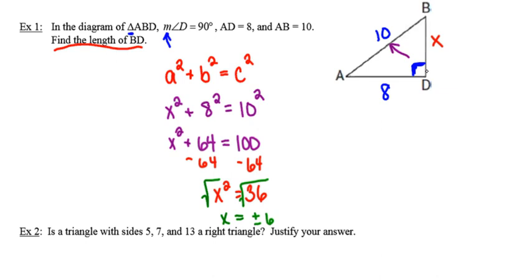So X is equal to, it can either be a positive 6 or a negative 6. In this case, X represents the length of one of the sides of our triangle. Negative 6 is an inappropriate solution. It doesn't make sense. We can't have a negative number for the length of a side of a triangle. So we're therefore going to reject the possible solution of negative 6. The length of BD, therefore, is equal to 6.